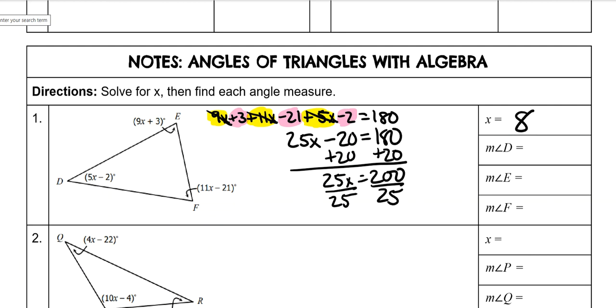Now we need to find the measures of each of the angles. So you just plug 8 in. So 11 times 8 minus 21. Put it in a calculator. Put it in exactly how that looks. You do 11 times 8 minus 21 and it would give you 67 for F. 67 degrees.